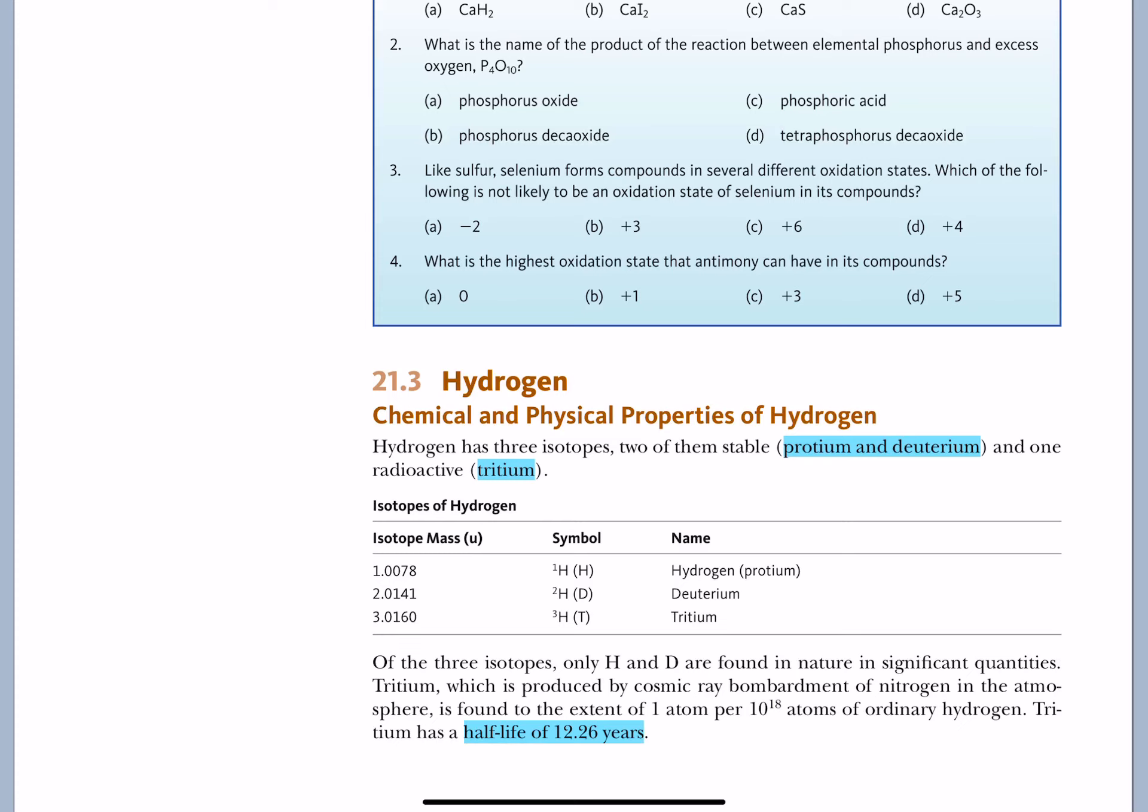We have three main isotopes of hydrogen. The hydrogen isotope with no neutrons is protium. Protium, a common word that means one, or beginning, or prototype.